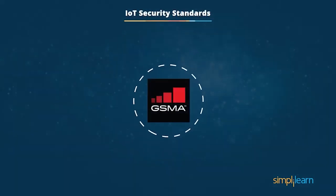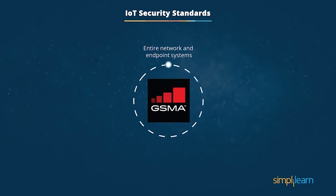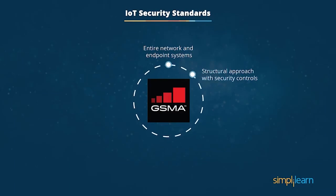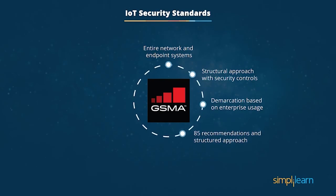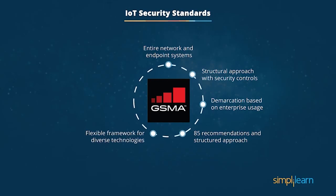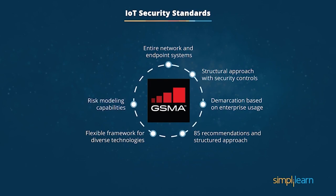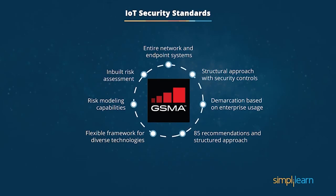Many individuals and organizations have contributed to create and set IoT standards. This covers the entire network and endpoint systems, brings a structural approach with security controls in place, and provides a demarcation based on its uses for enterprises to build IoT products. This standard has 85 detailed recommendations and a structured approach that can fit into any IoT ecosystem, with a flexible framework addressing the diversity of technology aligned to regulation, and risk modeling capabilities for any organization to choose from.